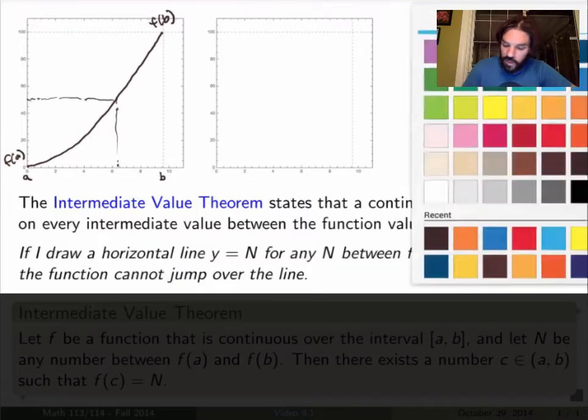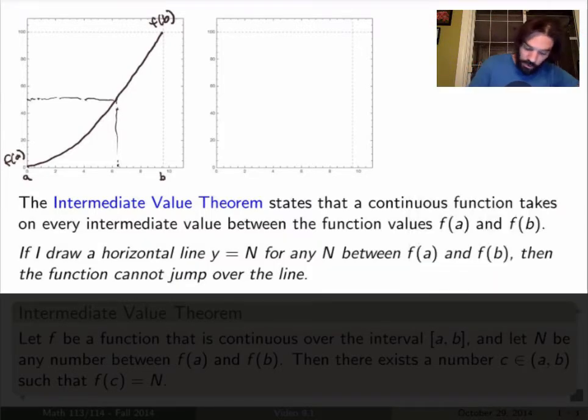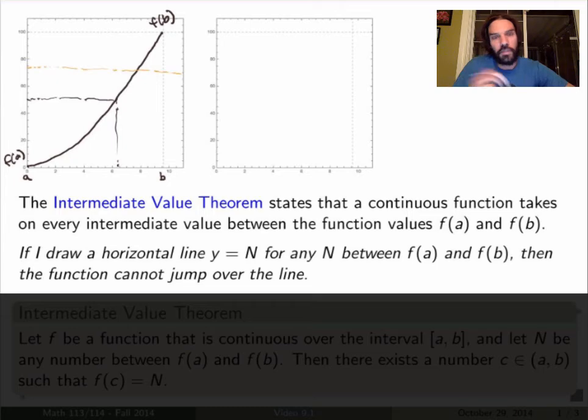Another way of understanding that from the graph point of view is that if I choose any y, any number here on the y-axis, I can draw a horizontal line, and the function cannot jump over the horizontal line, has to cross the horizontal line at a certain point. And that's obviously true as long as the function is continuous, which is one of the requirements of the Intermediate Value Theorem.